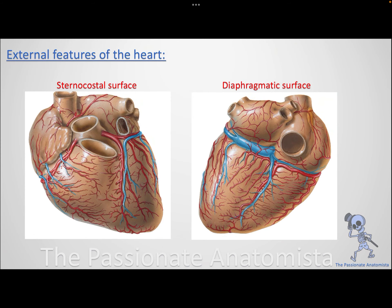So we have the sternocostal surface, the diaphragmatic surface, the base, and the apex. Now the last thing in this video: the external features of the heart.